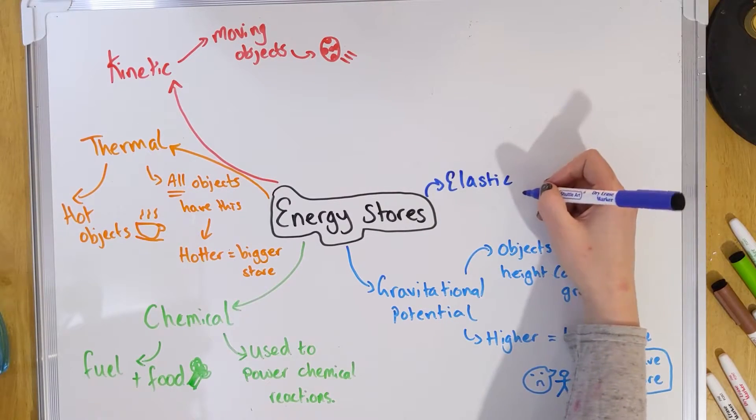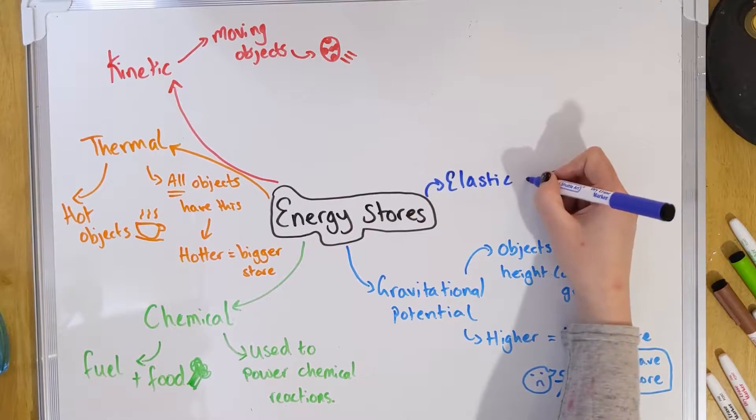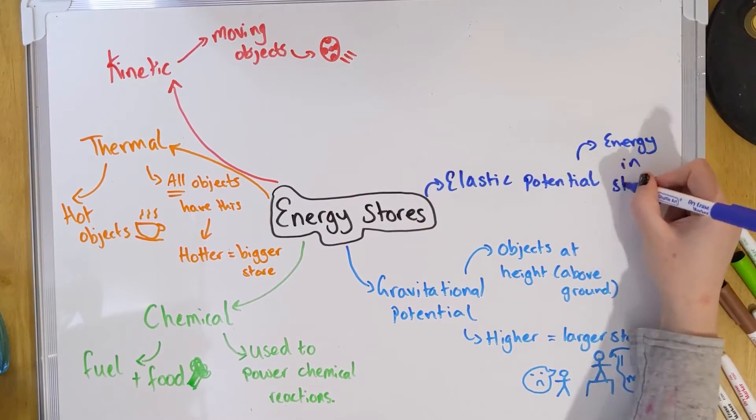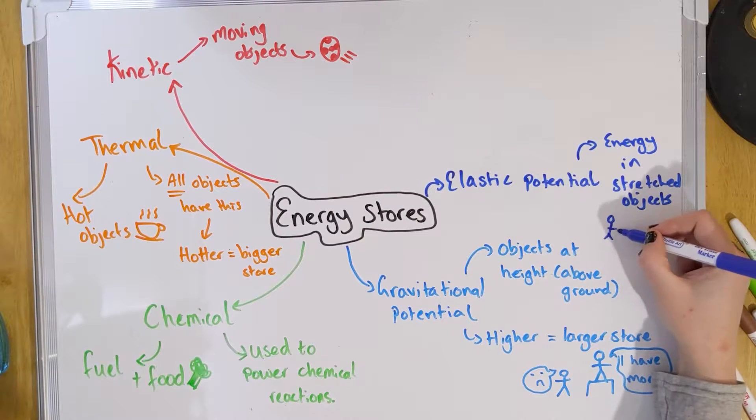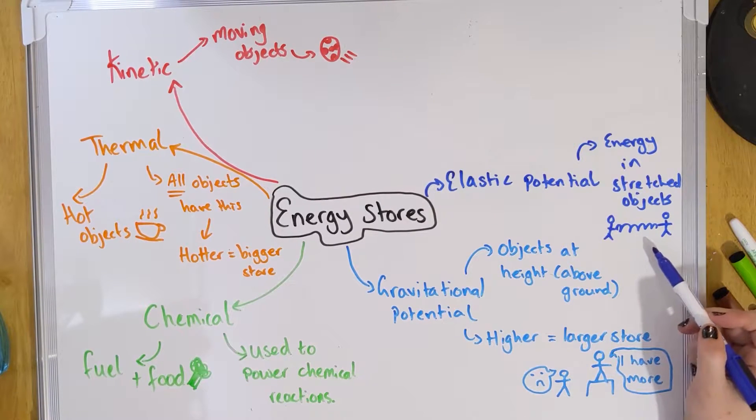Our next store is elastic potential, sometimes called elastic energy. Elastic potential is the energy store within anything that you stretch — it could be a spring, a hairband, or a bit of elastic. When you've stretched it out it has a larger store, and the more something is stretched, the bigger the store will be.